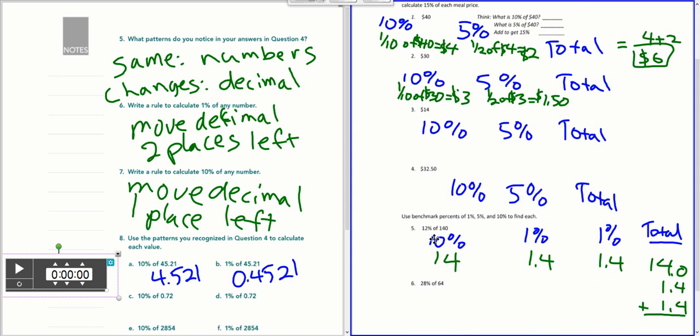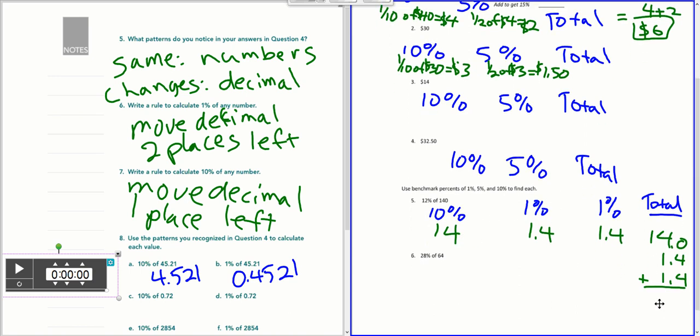Number 5 is a little bit harder. It's 12%. So we don't want to do 10 and 5. We want to do 10 and 1 and 1. So we're decomposing that 12% into benchmark percents that we know. So 10% of 140 is 14. 1% of that would be $1.40, or 1.4, and another 1.4. So to find the total, which would be 12%, we're going to add those together. 14 plus 1.4 plus 1.4. So I set it up here. You can find it from there.